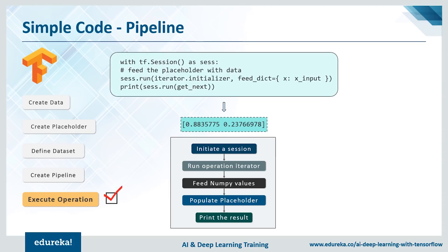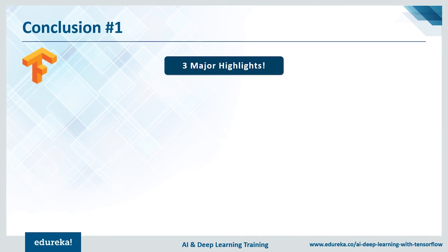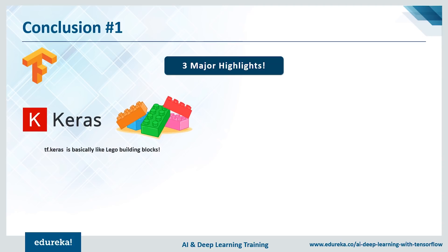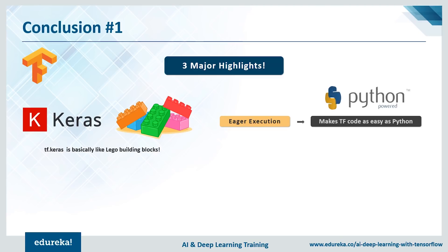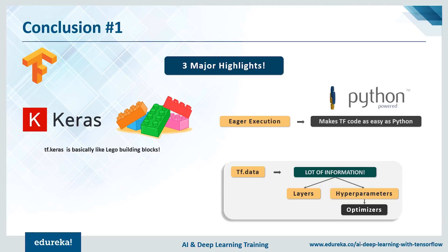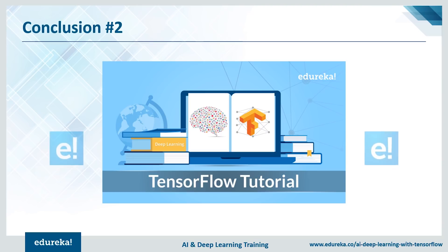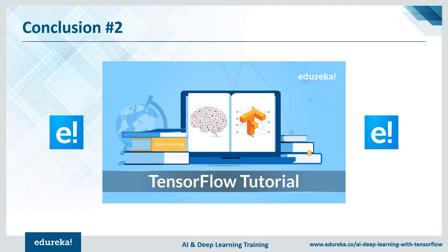That's how simple the TensorFlow pipeline is. To conclude, there are three main highlights. First is Keras — consider it the Lego building block. Keras is an API that works on top of TensorFlow and other major deep learning frameworks. Next is eager execution, which basically means TensorFlow code is as easy to execute as generic Python code. And there's TF Data. There are a lot of concepts to learn such as layers, hyperparameters, optimizers, and all of that — take it slow and understand what each component does and how it interacts with others in the pipeline.